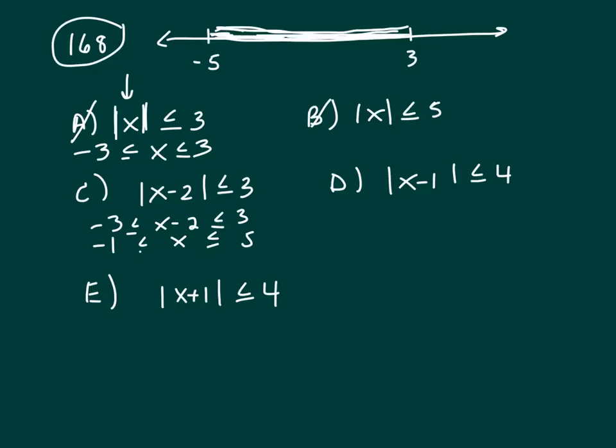Let's look at E. If x plus 1 is between 4 and negative 4, let's subtract 1 from everything, both ends and the middle, and you're left with x is less than or equal to 4 minus 1.